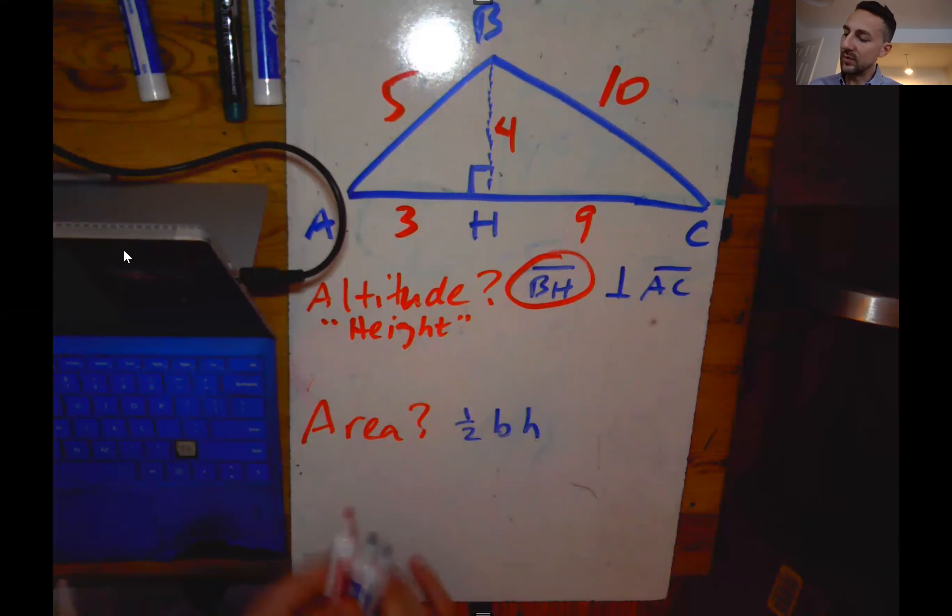So we have one-half multiply by... Now our entire base is AC, so we need to add three plus nine to get the whole thing. So this is 12.